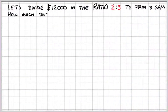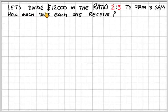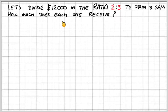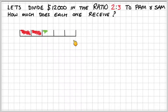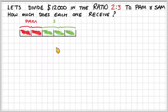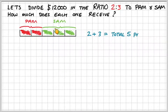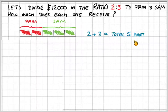Let's move on to dividing money in a given ratio. Let's divide $12,000 in the ratio of two to three to Pam and Sam. How much money does each person receive? If we draw a bar and divide it into five — Pam gets two parts and Sam gets three parts — there's a total of five parts.